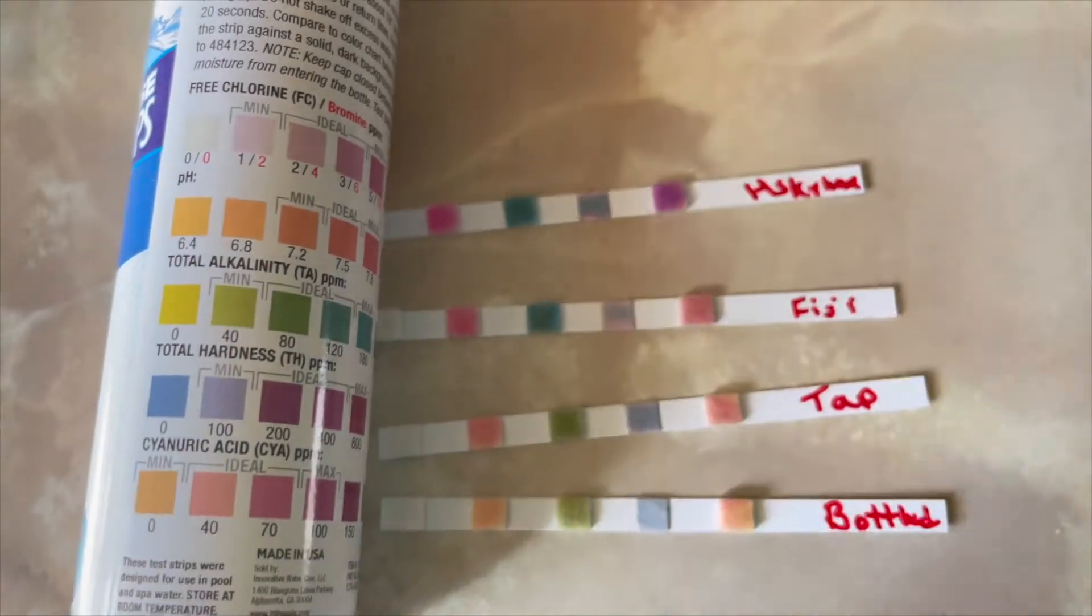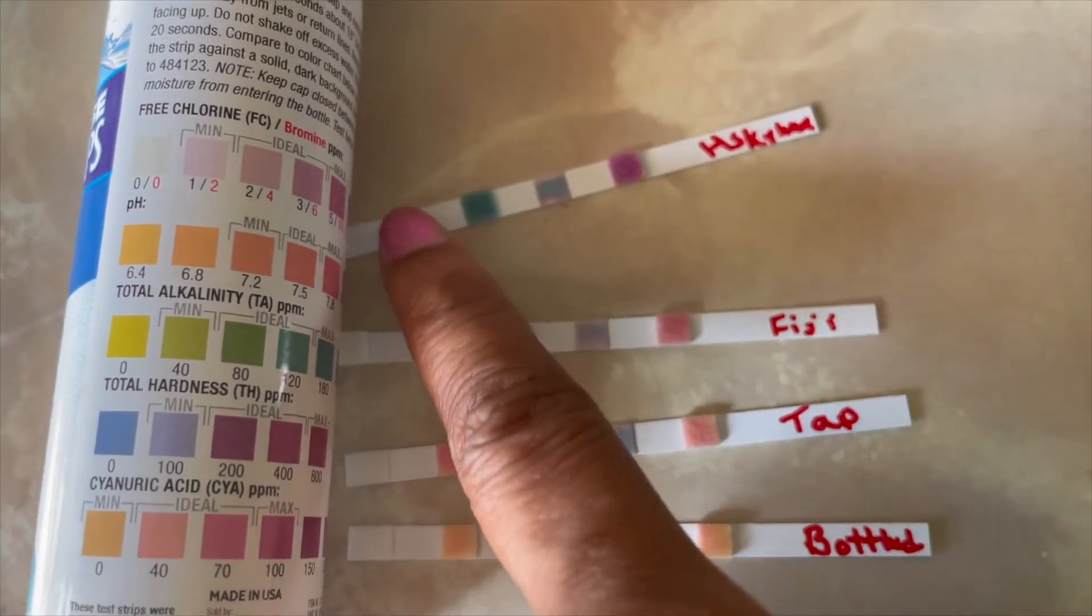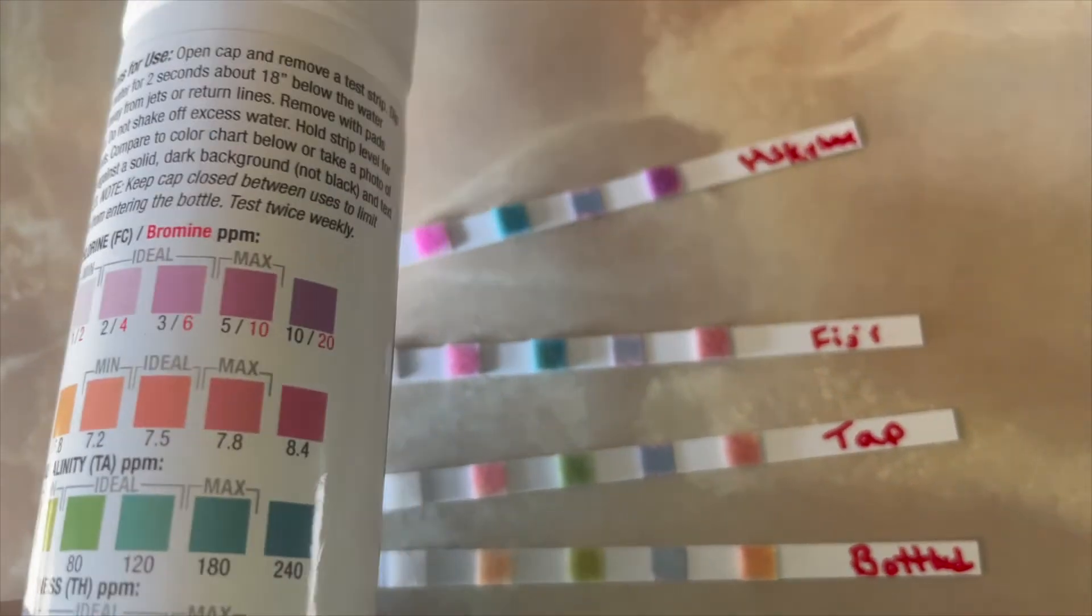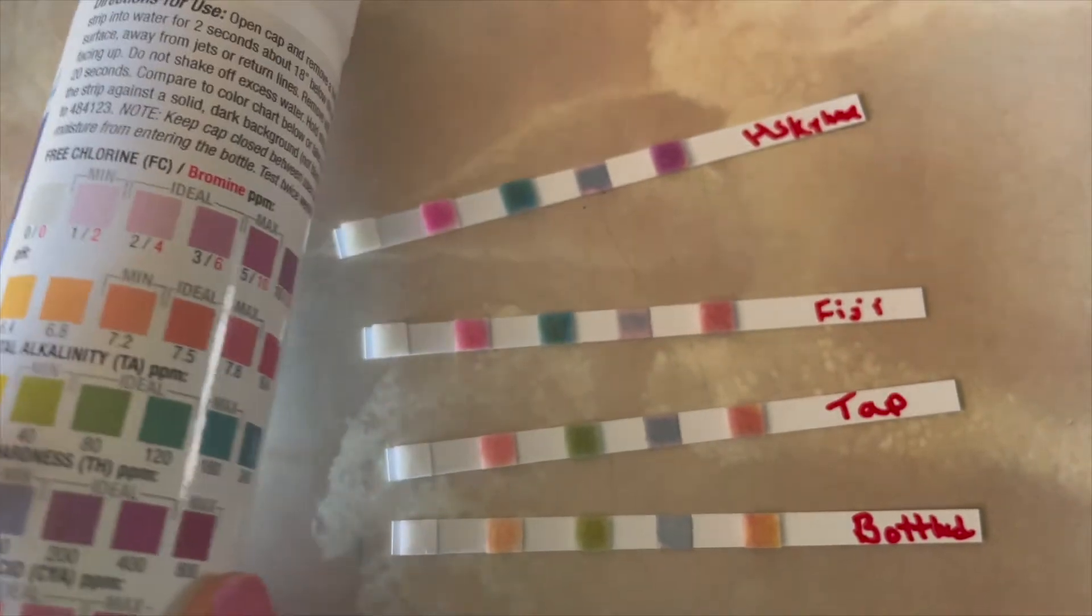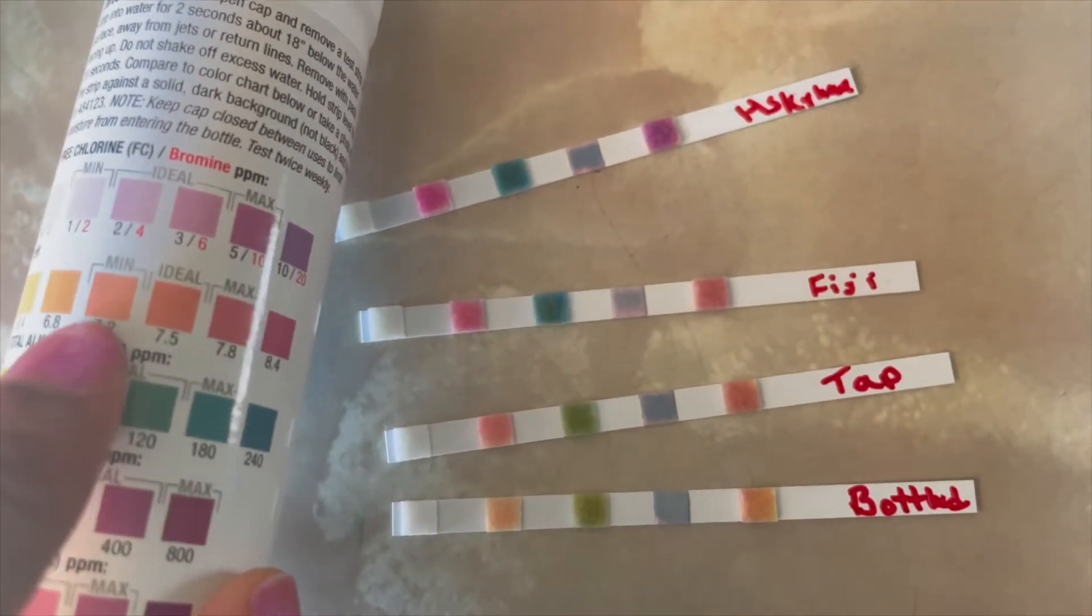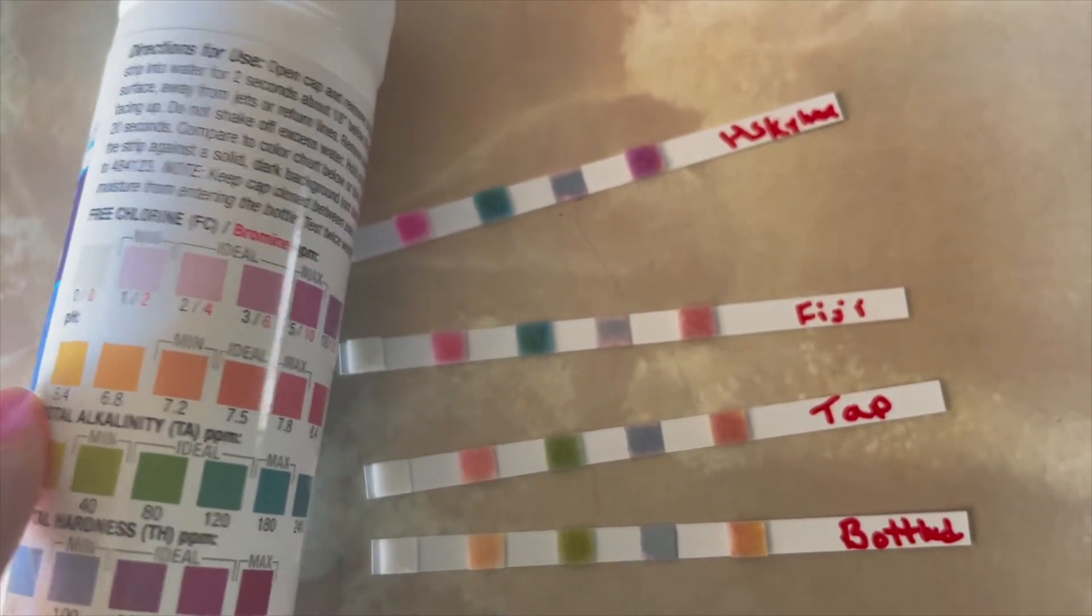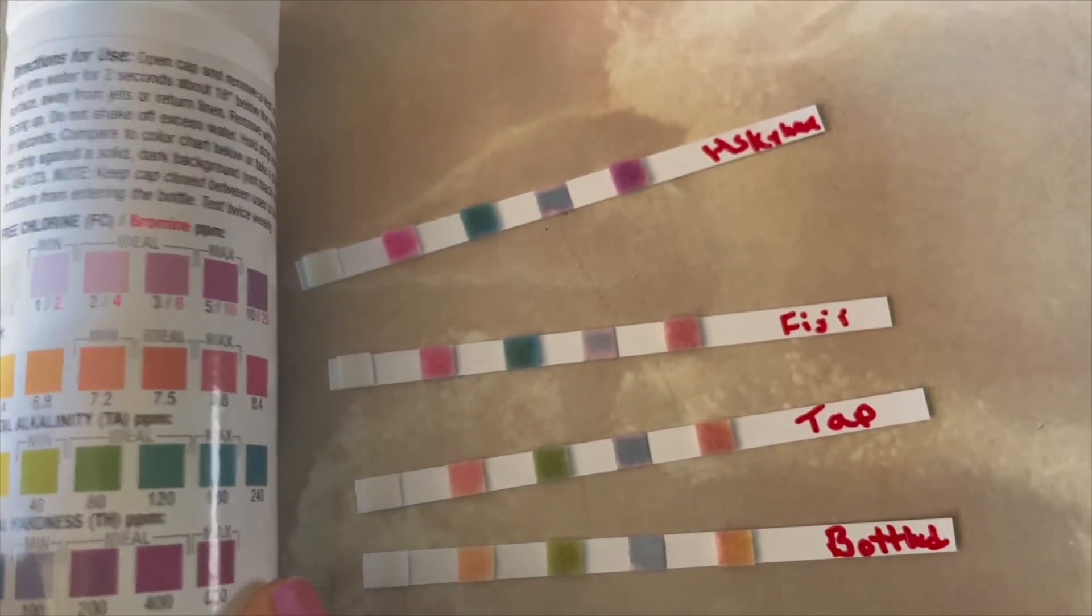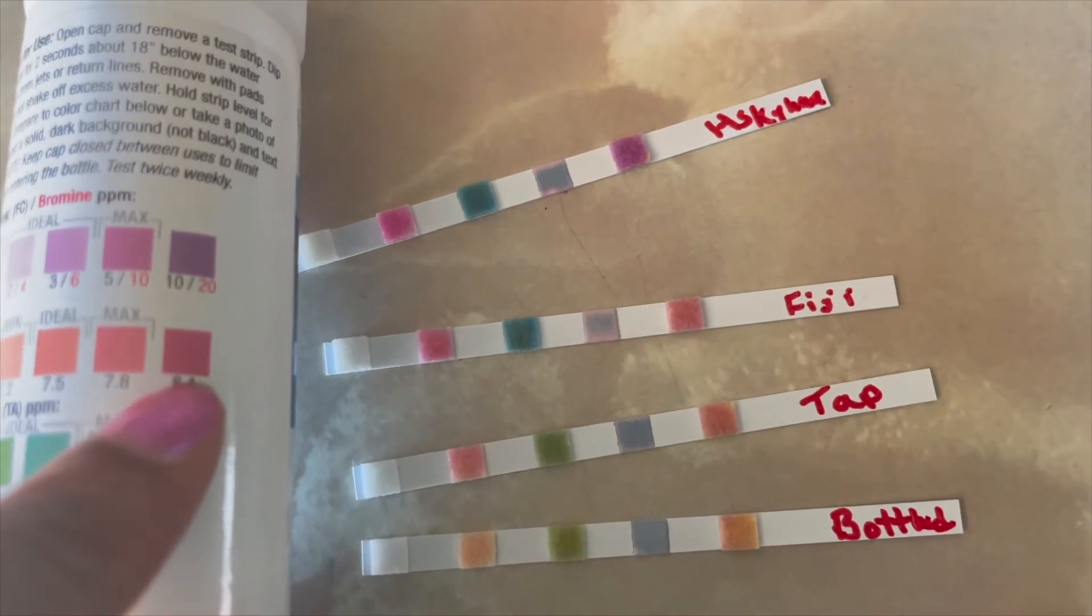Now the second row, that's the pH. So if you look at the chart there you can see that Skyam and Fiji are pretty close. The pH is very pink up there on that end around 7.8 to 8.4. And take a look at the tap water. The tap water was more orange and peachy.